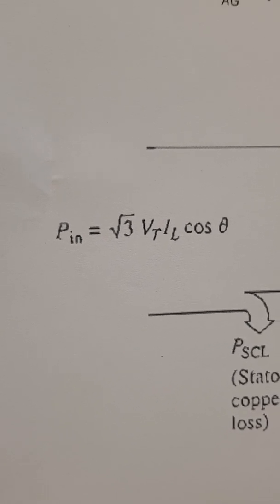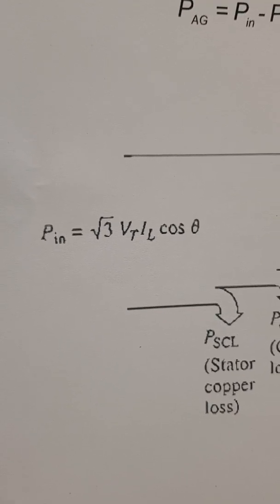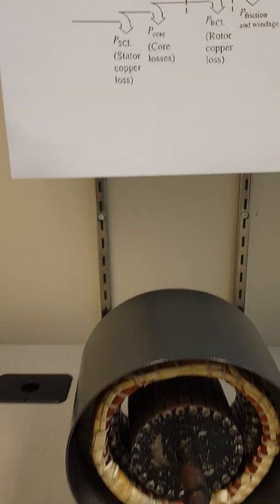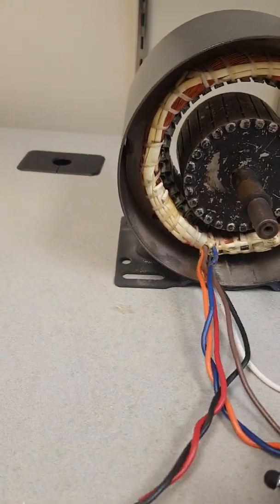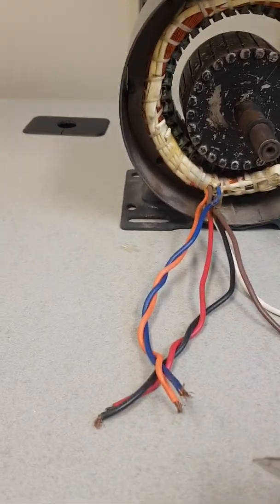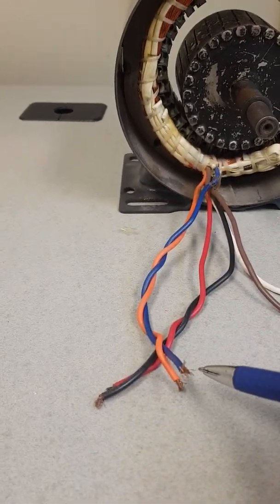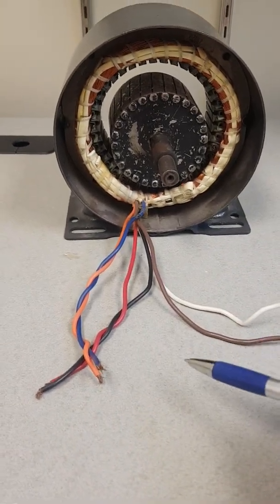We have root 3 V_line I_line cosine theta, and this is the power that is supplied through the three phases: first phase, second phase, and third phase. For each phase, there are two wires—the starting and the end of the winding—so either this is delta or Y connected. This is your input power.